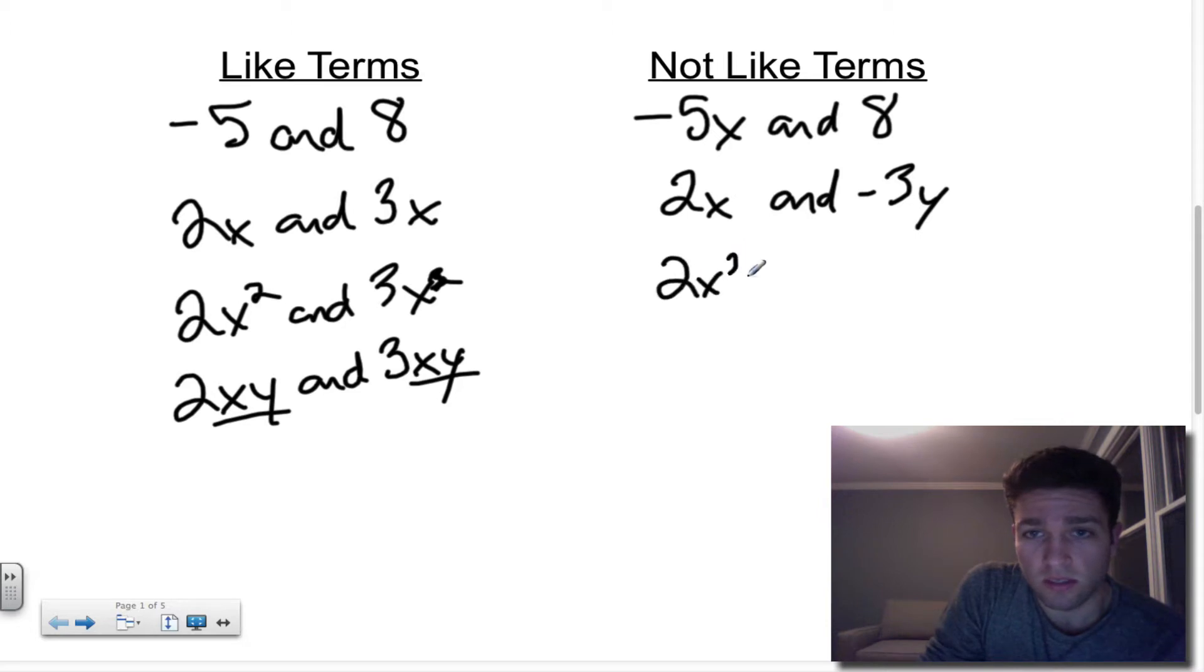We'll do two more. 2x² and negative 3x. Now, this one can trick some people because you see the x and the x, it looks the same, but this is actually x² and this is x, or x to the first. So these are not the same. They're not like terms. They cannot be combined. And then finally, we'll end with 2x and negative 3xy. Where they both have an x, this one also has a y. So x, y, and x are not the same variable factors, so these are not like terms.